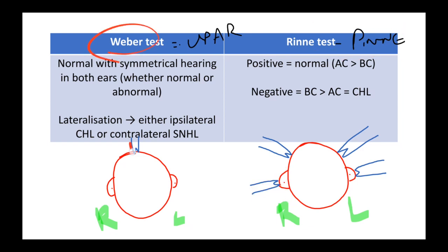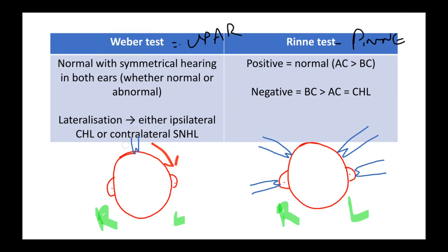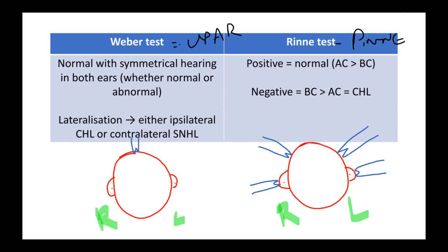In Weber's test, we place the tuning fork over the patient's forehead — think 'Weber uber' to remember this. Normally, the patient should hear equally on both sides, because the eighth cranial nerves on each side transmit sound equally to the brain.